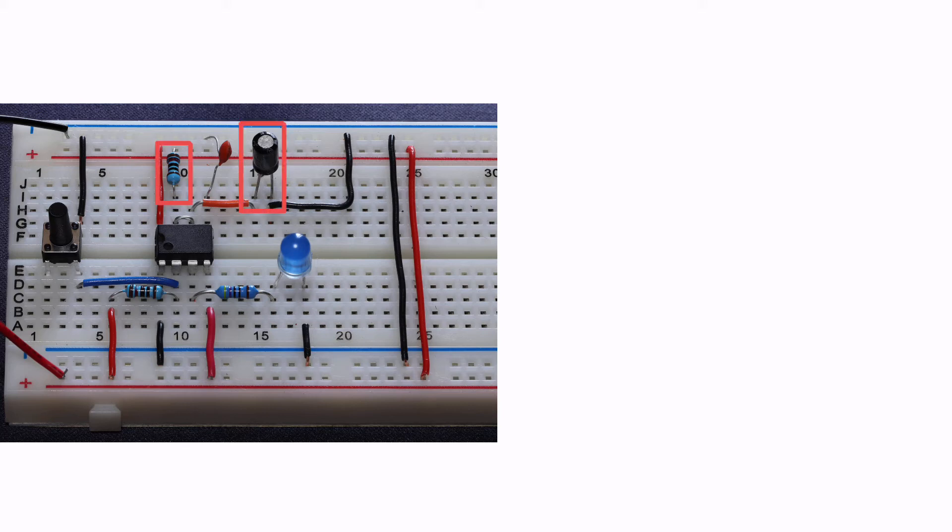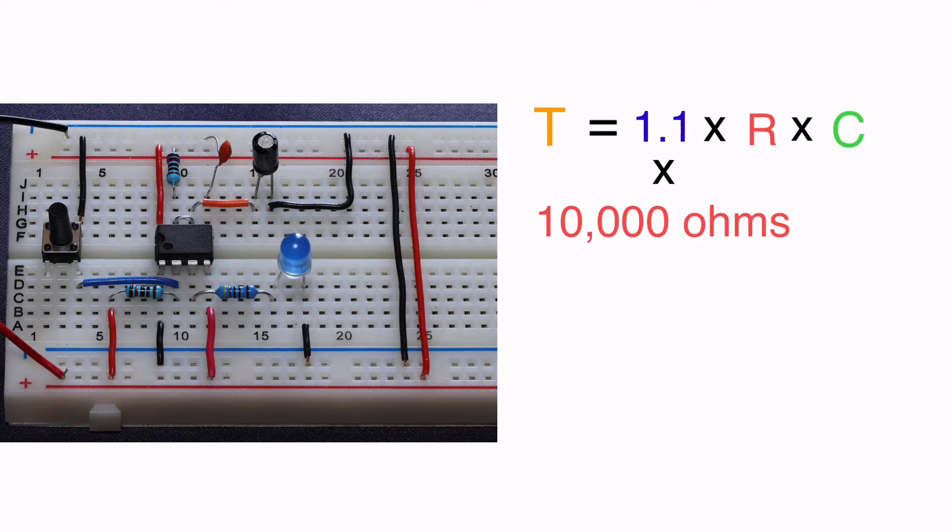So we know that the time interval of the output would be equal to 1.1 multiplied by the resistance value, which in this case is 10,000 ohms, multiplied by the capacitance value, which in this case is 0.1 microfarads or 0.0000001 farads.